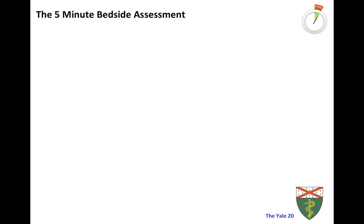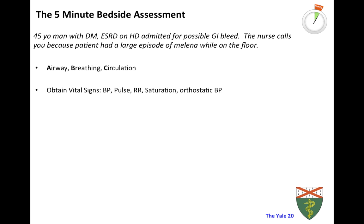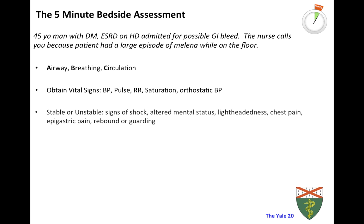Let's begin with our five-minute bedside assessment of a patient. You are caring for a 45-year-old male on a medicine floor admitted with diabetes as well as end-stage renal disease on hemodialysis. You're paged by a nurse who tells you that the patient has just had a large episode of melena. Start with the basics by assessing the ABCs and vital signs. Remember that the most specific early sign of a severe bleed is tachycardia. Ask yourself if the patient is stable or unstable — are they in shock? If they have decreased level of consciousness, that could be a sign that they need to be intubated. You should also ensure they have good IV access for fluid resuscitation, as a stable patient can quickly become unstable.